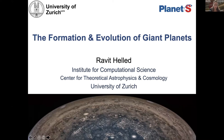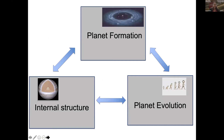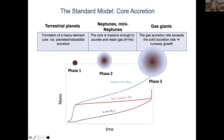I'm Ravit Heled from the University of Zurich. The most important point I want to make is that there is a clear link between the formation of planets, their evolution, and their internal structure. We cannot study each of these aspects separately because they are really interconnected. We need to investigate them together to get a better understanding of giant planets in general.